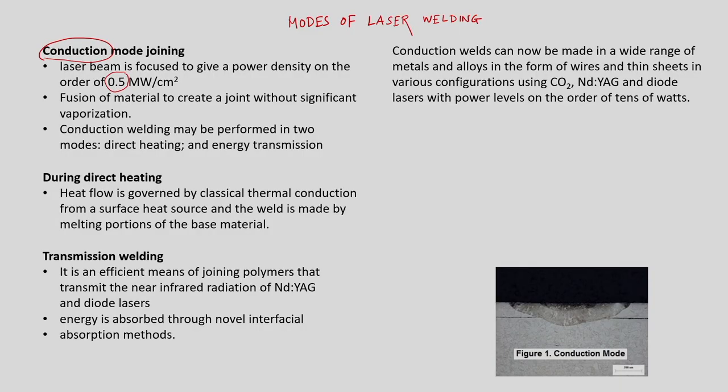In conduction mode, we are applying controlled laser beam heat energy to get melting only — without vaporization of the work parts. By using this melting and redeposition, we are getting shallow type of weld joints. Conduction welding may be performed in two modes: direct heating and energy transmission.